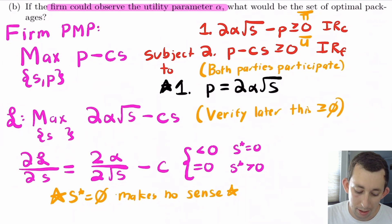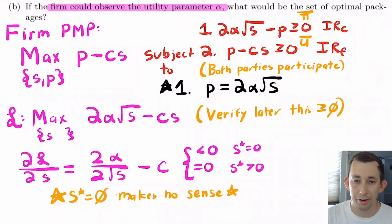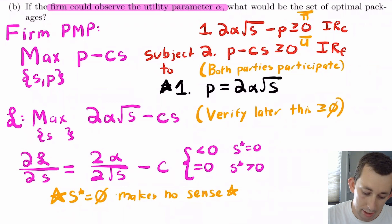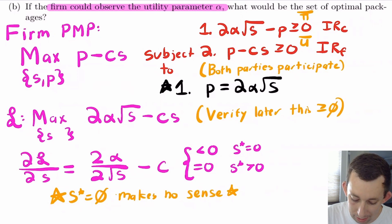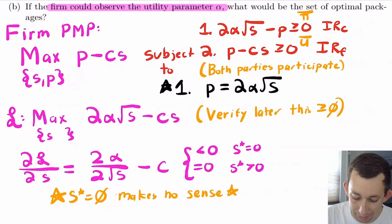Now let's first pretend there's no uncertainty — say there's a giant sign above the consumer's head telling you whether you're a low type or a high type. If I know your type, I can offer you exactly the right package to extract the maximum surplus from that transaction. The firm's profit maximization problem is: maximize profit subject to the individual rationality constraint that the consumer is better off buying than doing nothing, and also the firm's own IR constraint that profit ≥ 0.